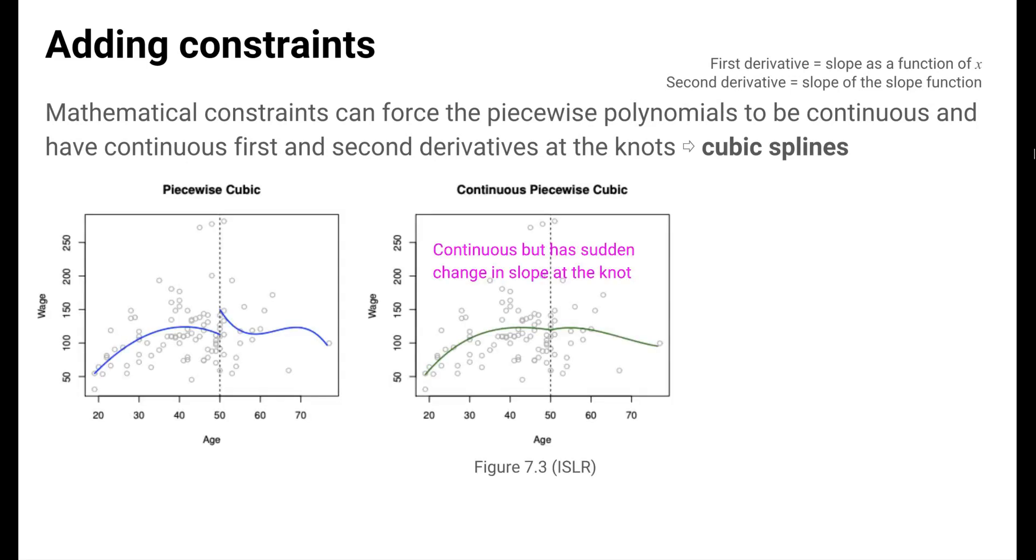In the figure here from the ISLR book, the second plot is not quite a cubic spline because it's only been constrained to be continuous at the knot, but not necessarily to have continuous first and second derivatives. It looks better than the first plot because it's continuous, but it still looks a bit odd in that the slope changes suddenly. The slopes go from negative just before to positive right after. The last plot on the right shows a cubic spline that looks quite smooth and still generally seems to fit the data well. This function was constrained to be continuous at the knot and had continuous first and second derivatives.